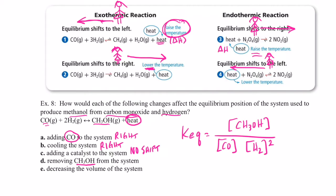If we remove methanol from the system, we're removing product — that's a stress. We want to replace what was removed, so this shifts right. Finally, if we decrease the volume of the system, that's the same as increasing the pressure. With higher pressure, the system relieves stress by going to the side with fewer moles of gas. The reactant side has three gas molecules (one CO + two H₂), while the product side has just one, so decreasing volume also shifts the equilibrium to the right.